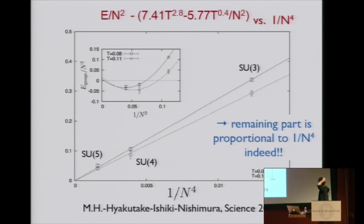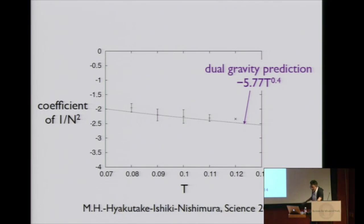If we subtract prediction by Hyakutake to the next leading order from the simulation result, so x-axis is 1/n^4, we can really see nice straight line behavior. Somehow 1/n^6 correction cannot be seen, but the remaining part is really proportional to 1/n^4. So 1/n² term is correctly calculated by Hyakutake.